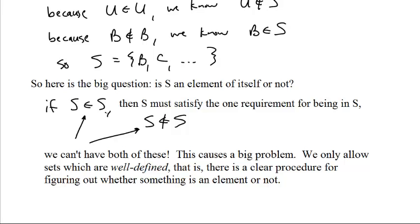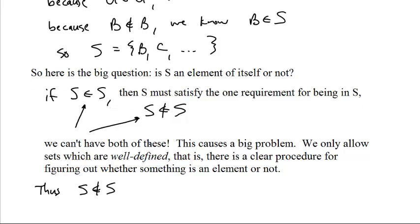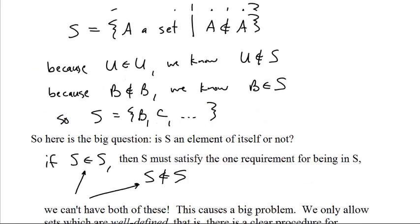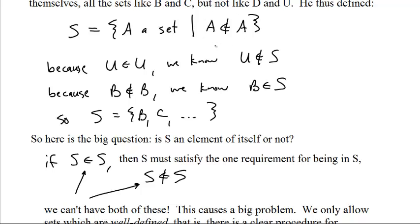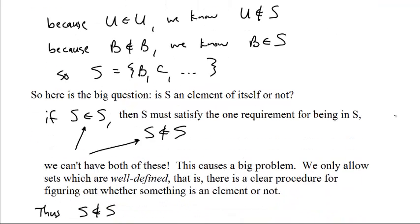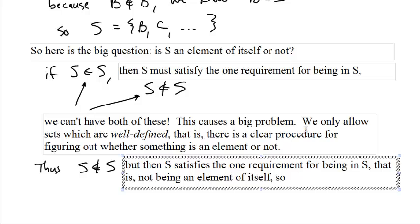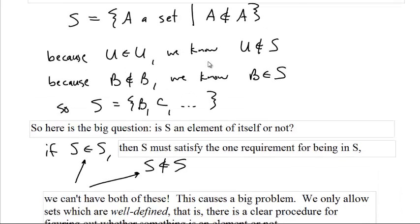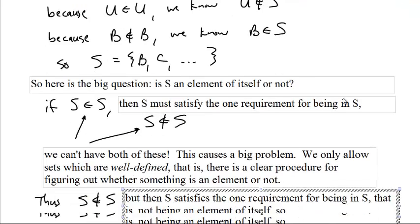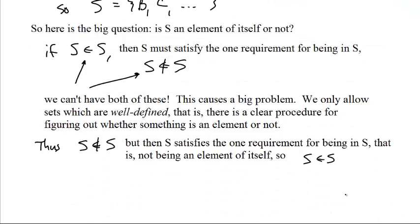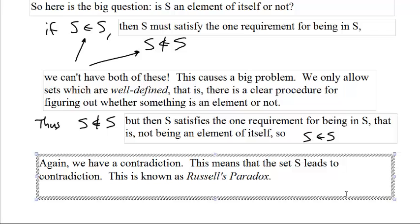So, we have problems if we say that S is in S. Fine. Well, then let's say that S is not in S. If S is not in S, then it satisfies the one and only one thing that you have to do to be in S. S satisfies the one requirement for being in S. It doesn't contain itself. And that means it's not an element of itself. That means it qualifies. It is one of these things. S is in S. We have the exact same problem as before.